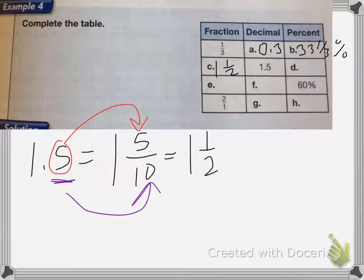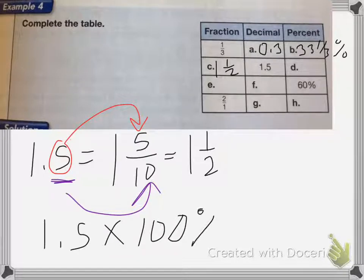And then to change that to a percent, you're going to do 1.5 times 100%. So that means we move the decimal place over twice: 1, 2. And I end up with 150%.